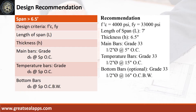Design recommendations are as follows. FC' equals 4,000 PSI. FY equals 33,000 PSI. Length of span is 7 feet. Thickness is 6.5 inches. Main bars of grade 33: 1/2 inch diameter bar at 5 inches on center. Temperature bars of grade 33: 1/2 inch diameter bar at 15 inches on center. Bottom bars of grade 33: 1/2 inch diameter bar at 16 inches on center, both ways.